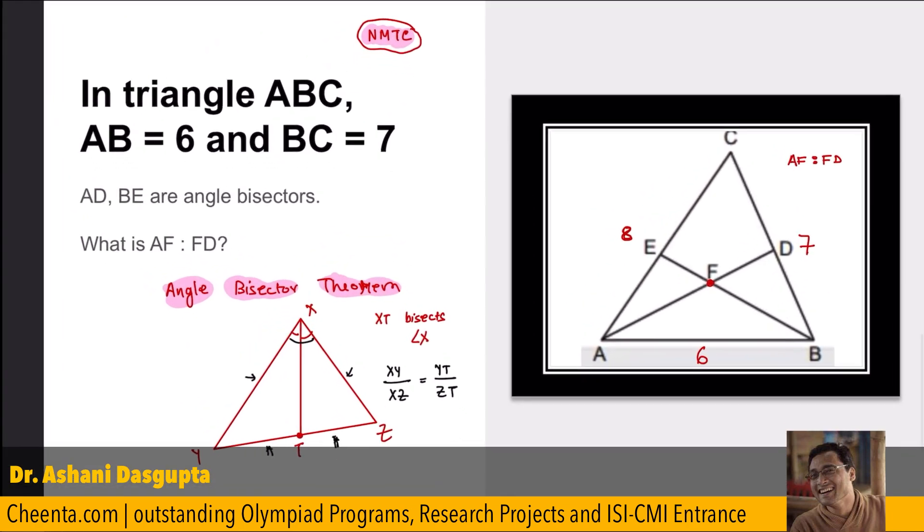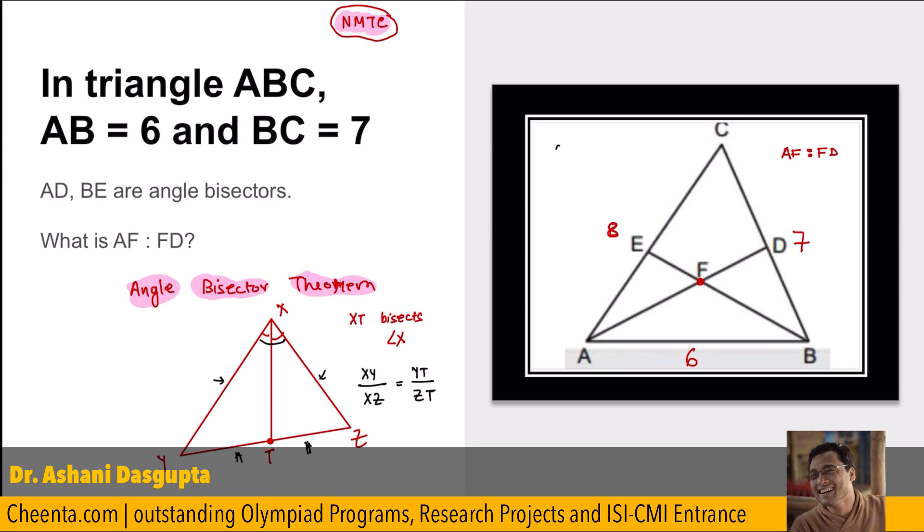If you look at this carefully, AB over AC, which is 6 over 8 or 3 over 4 is equal to BD over DC. BD over DC. AB over AC is equal to BD over DC. Which means BD over DC is 3 by 4.